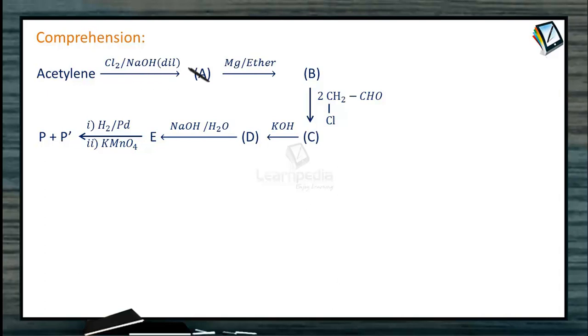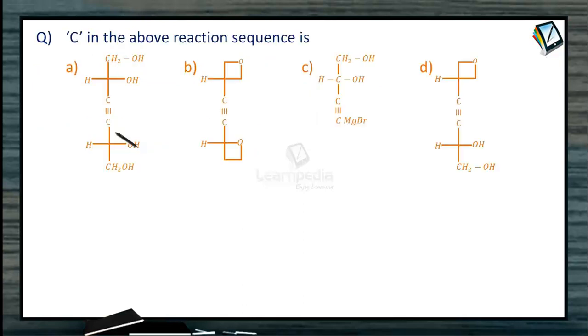Comprehension. Acetylene when treated with chlorine in the presence of NaOH gives A, which is then treated with magnesium in the presence of ether to give B. B is then treated with alpha-chloroacetaldehyde 2 moles. C is formed which is then allowed to react with KOH to give D, and D is subjected to alkaline hydrolysis to give E. E on reduction with Lindlar's catalyst followed by KMnO4 gives P plus P dash. Then what is C in the above reaction sequence?